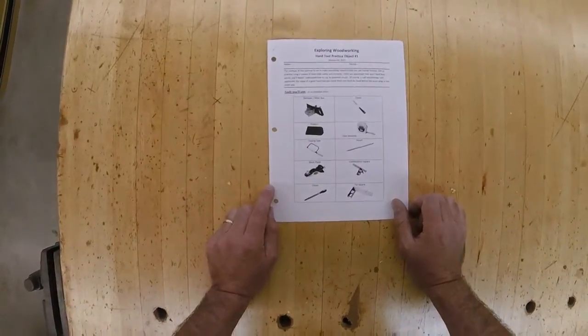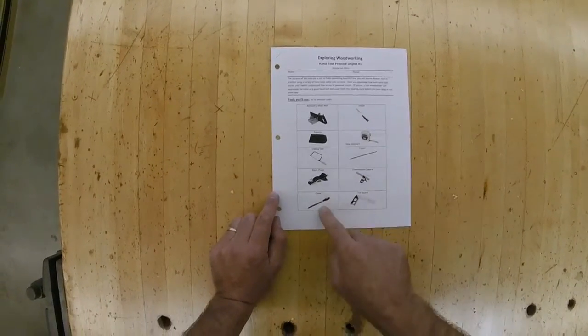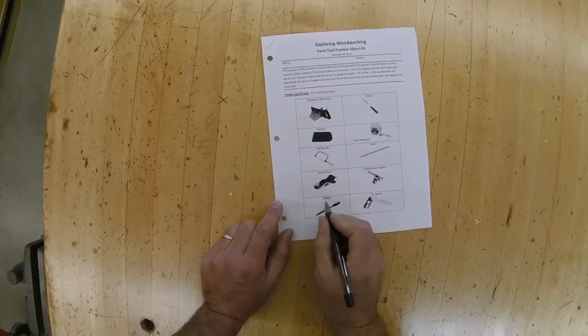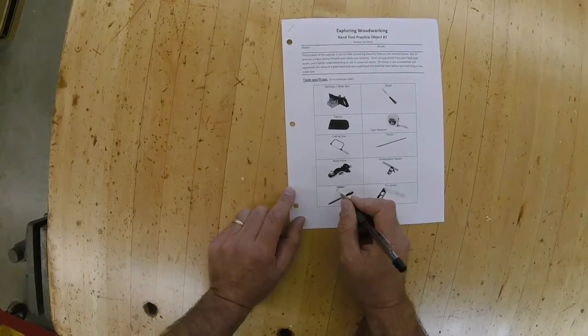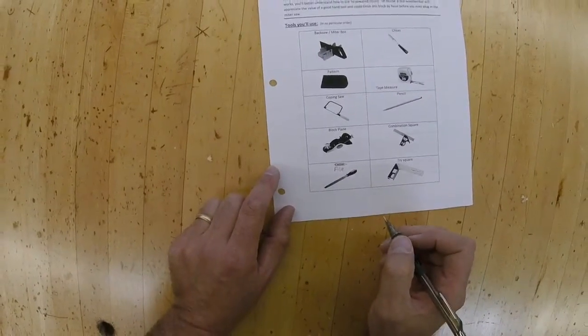I just realized, looking at this packet, that I've labeled this as a chisel. I have chisel right here. That's actually called a file. I'm going to cross that out and fix that right now. If you find that on your packet, this one here is called a file, and I'll show that to you.